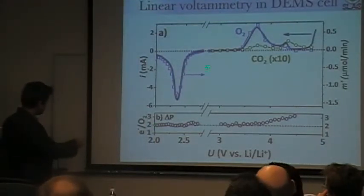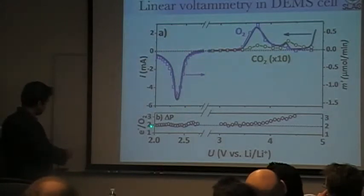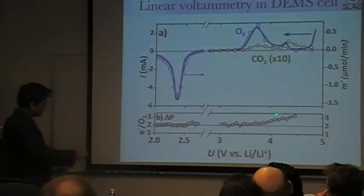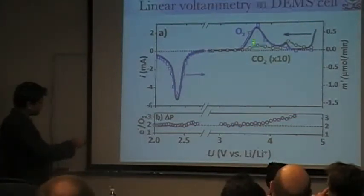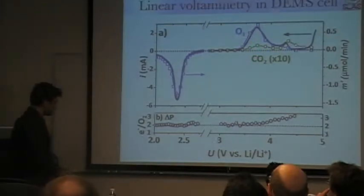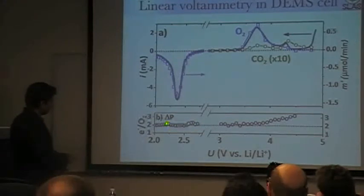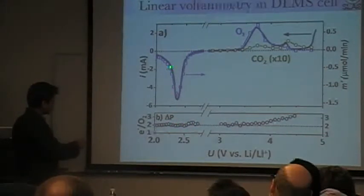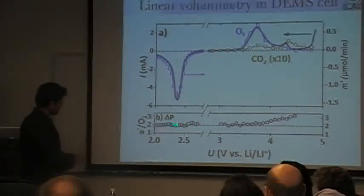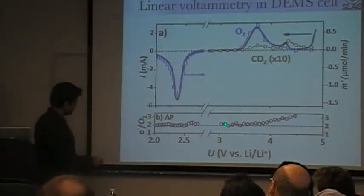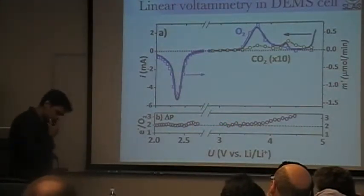Under discharge — the reduction — the reaction is nearly perfect at two electrons per oxygen. Under charge it is almost perfect at two electrons per oxygen, but then starts to deviate, with some CO2 evolution which we'll come back to. Basically, this reasonably proves that the reaction going on under discharge and charge is the reduction of oxygen during discharge and evolution of oxygen during charge.